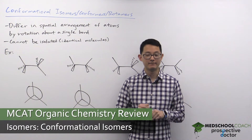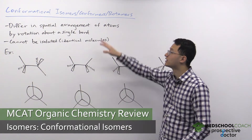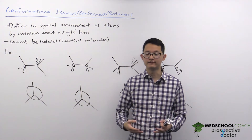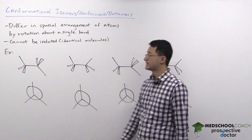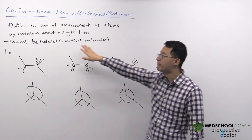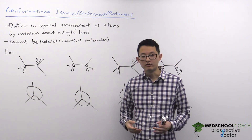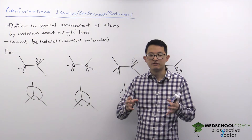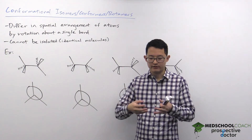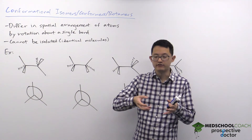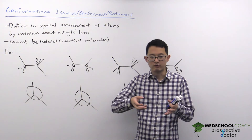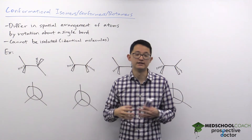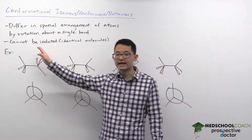In this video we're going to talk about conformational isomers, also called conformers or rotomers. They are another type of diastereomer, meaning they are stereoisomers that differ in the spatial arrangement of their atoms — in this case by rotation about a single bond. Since there is free rotation about single bonds, conformational isomers represent very temporary differences. When a bond rotates you get a different conformational isomer, and a moment later it rotates again. The main thing to understand is that conformational isomers are identical molecules in different states, and since they are identical molecules they cannot be isolated.